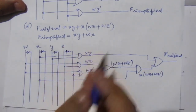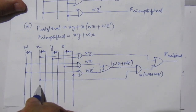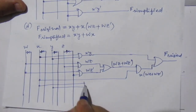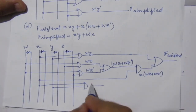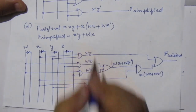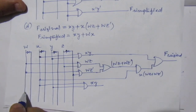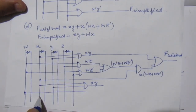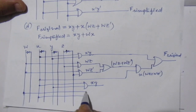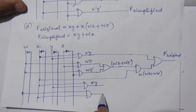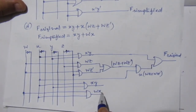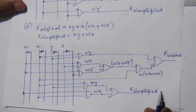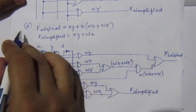For F simplified, which is XY + WX: take X and Y, multiply with an AND gate to get XY. Then take W and X, multiply with an AND gate to get WX. Use an OR gate to get F simplified. This is the logic diagram for part D.